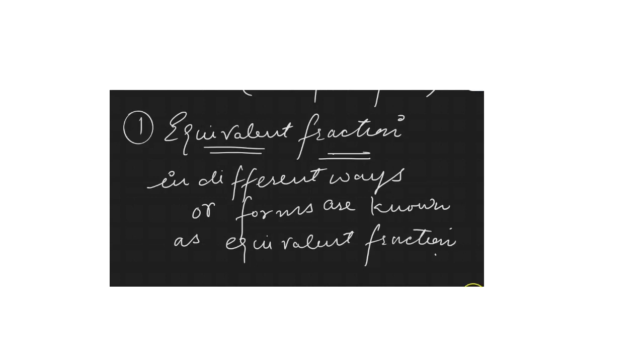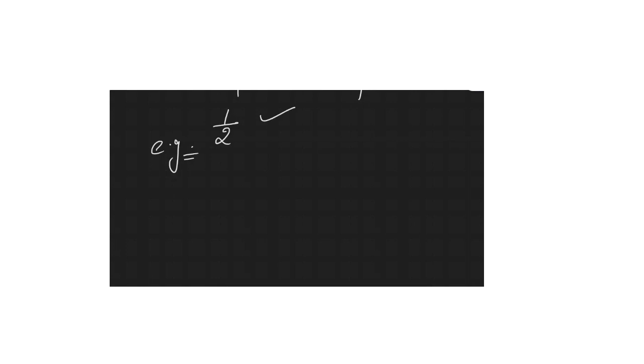In other words, if you multiply the numerator and the denominator of a fraction by the same non-zero number, you get an equivalent fraction. For example, if I have 1/2 and I want to find its equivalent fraction, I multiply both the numerator and the denominator by the same non-zero number.